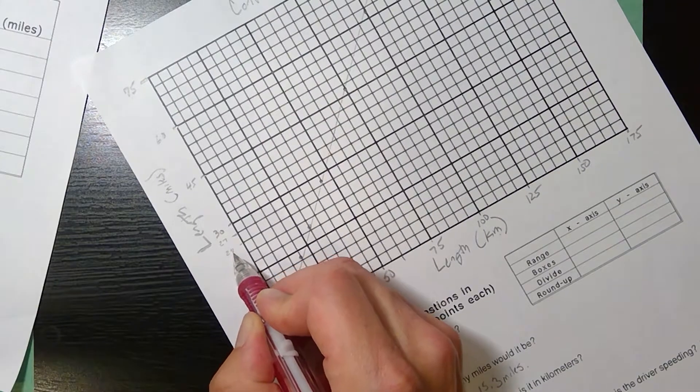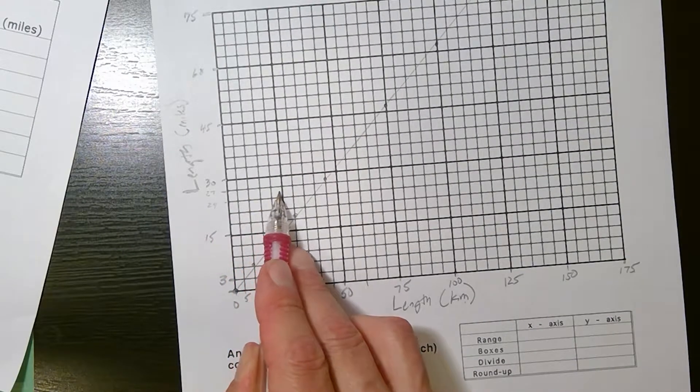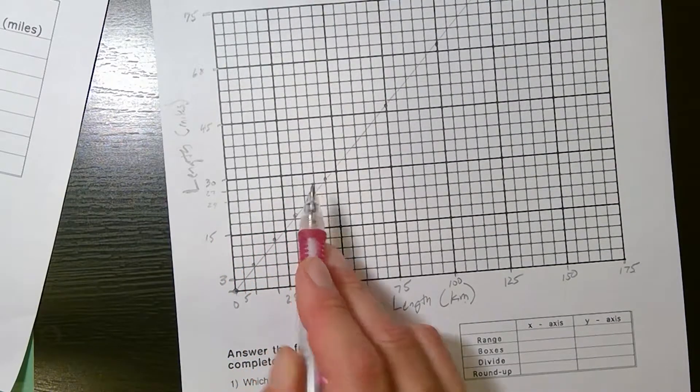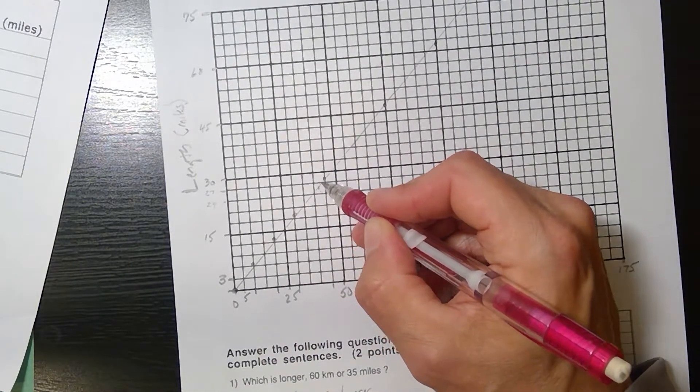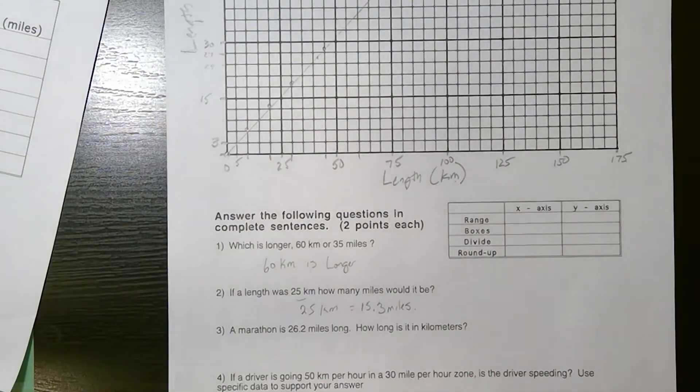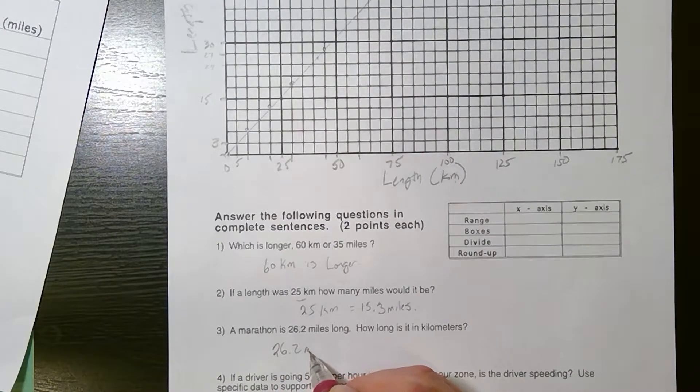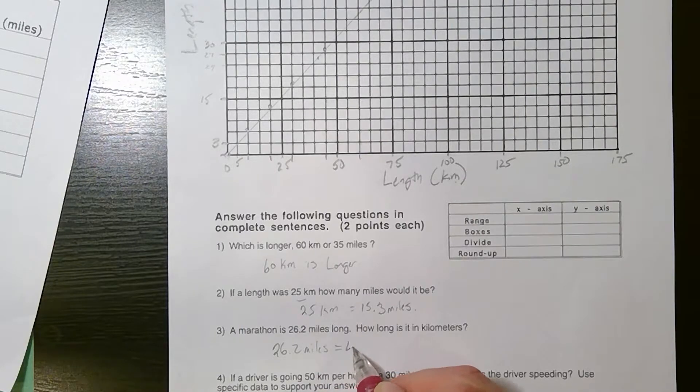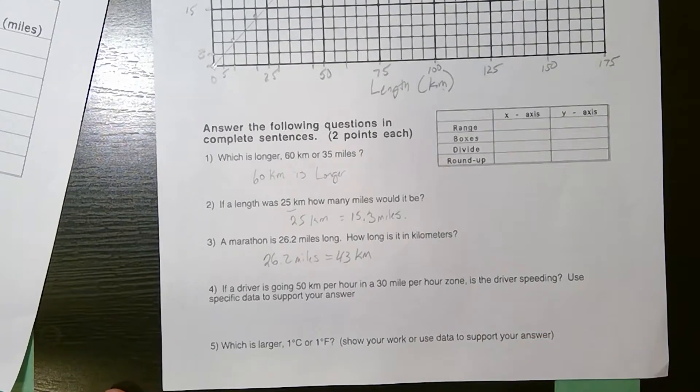I'm reading it right about here. So that's between 40 and 45. So maybe 43 kilometers. So 26.2 miles equals 43 kilometers. That's based on the graph. Obviously, you could do a formula that might give you a more exact value.